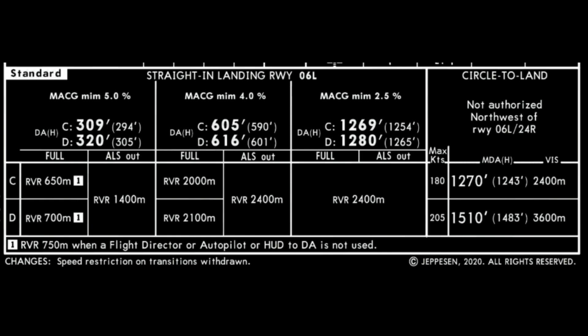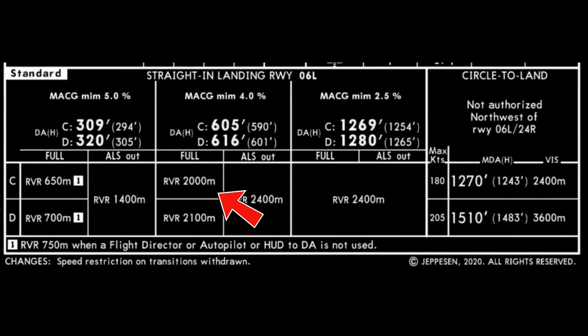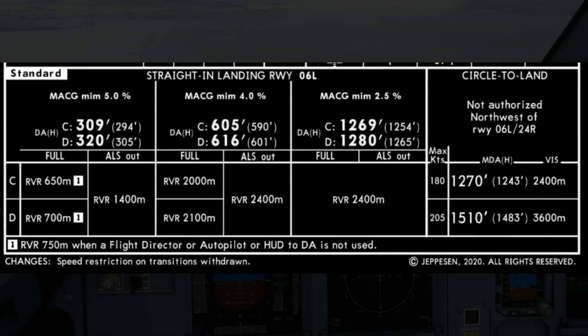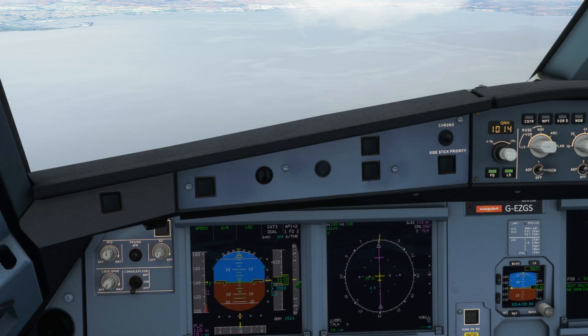Assuming our missed approach climb gradient is a minimum of 5% — we can presume the A320neo with both engines running will easily meet that. You can see from this chart that if the missed approach climb gradient was a minimum of 4% or even 2.5%, then the runway visual range required to legally start this approach jumps up to 2,000 metres and 2,400 metres respectively. You can also see that the runway visual range minimums increase if the approach lighting system is unavailable, indicated by the box 'ALS out'. So to quickly recap: our aircraft is fully operational and shows Cat 3 Dual capability, but the runway we're landing on only has Cat 1 minimums shown.